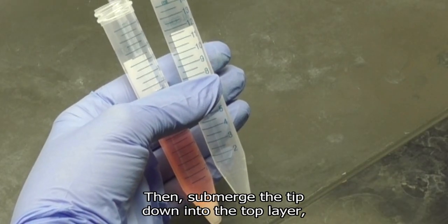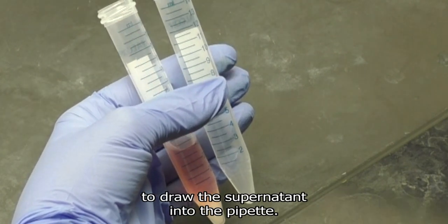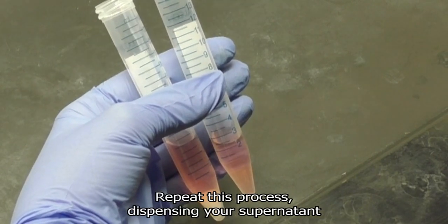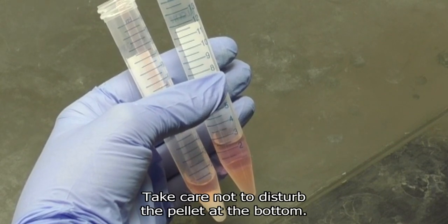Then submerge the tip down into the top layer and gently release pressure to draw the supernatant into the pipette. Repeat this process, dispensing your supernatant into a clean receiving vessel. Take care not to disturb the pellet at the bottom.